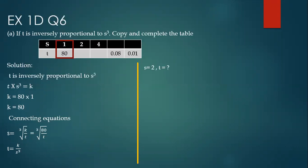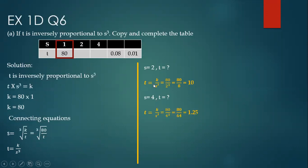Now we are going to solve. If s is 2, how much is t? Use the connecting equation t equals k upon s-cubed. The cube of 2 is 8, and 80 upon 8 is 10, so write 10 here. Now if s is 4, use the same connecting equation. The cube of 4 is 64, and 80 upon 64 is 1.25, so write 1.25 here.